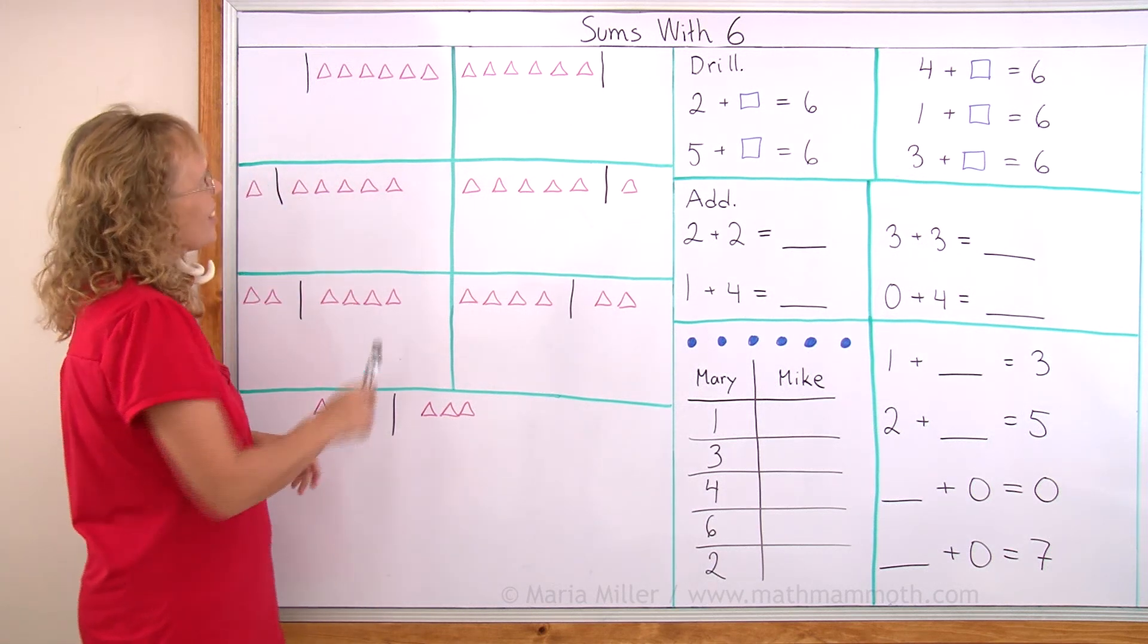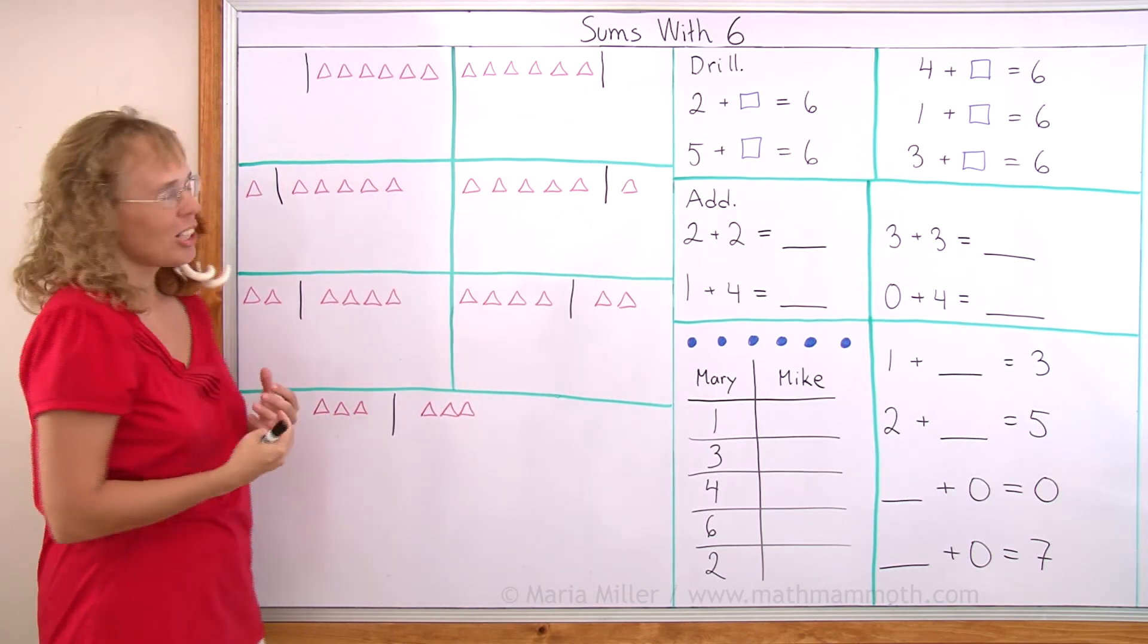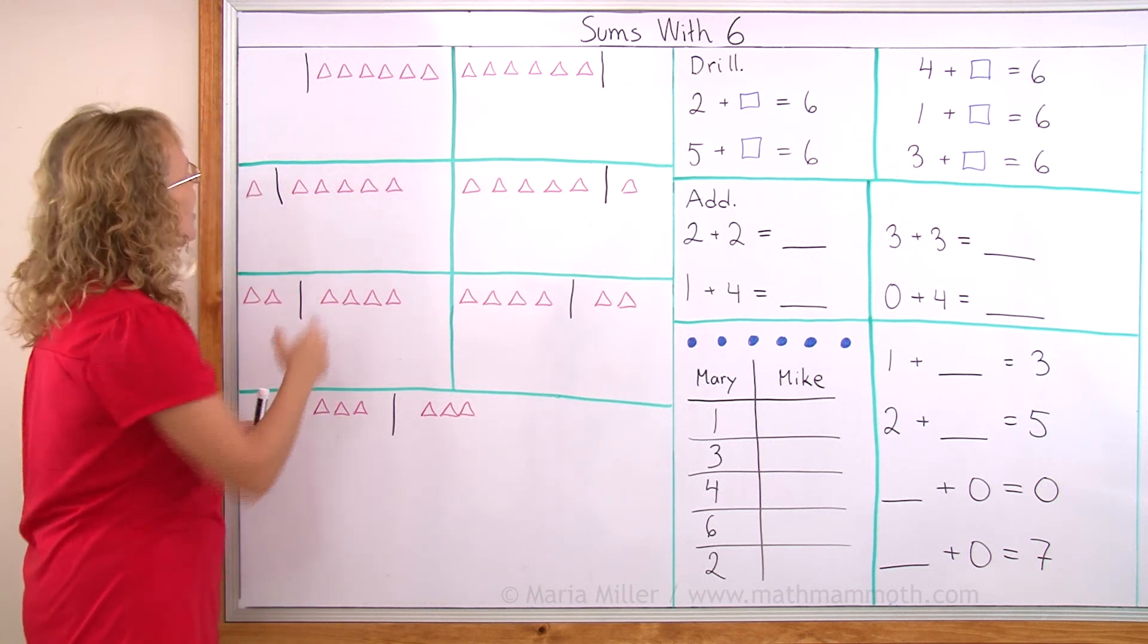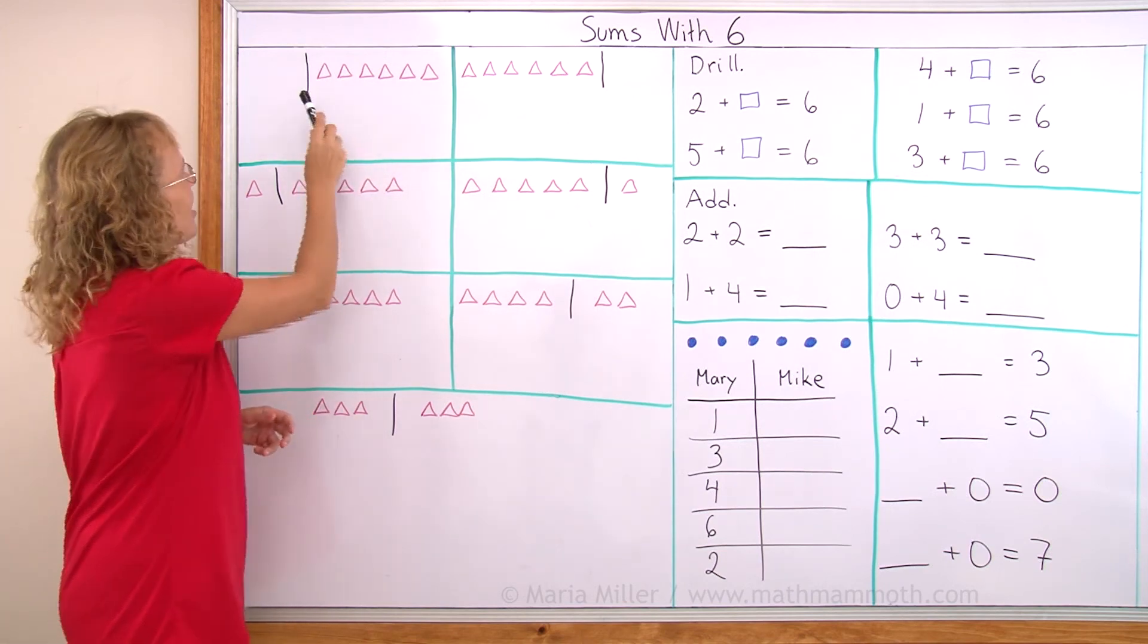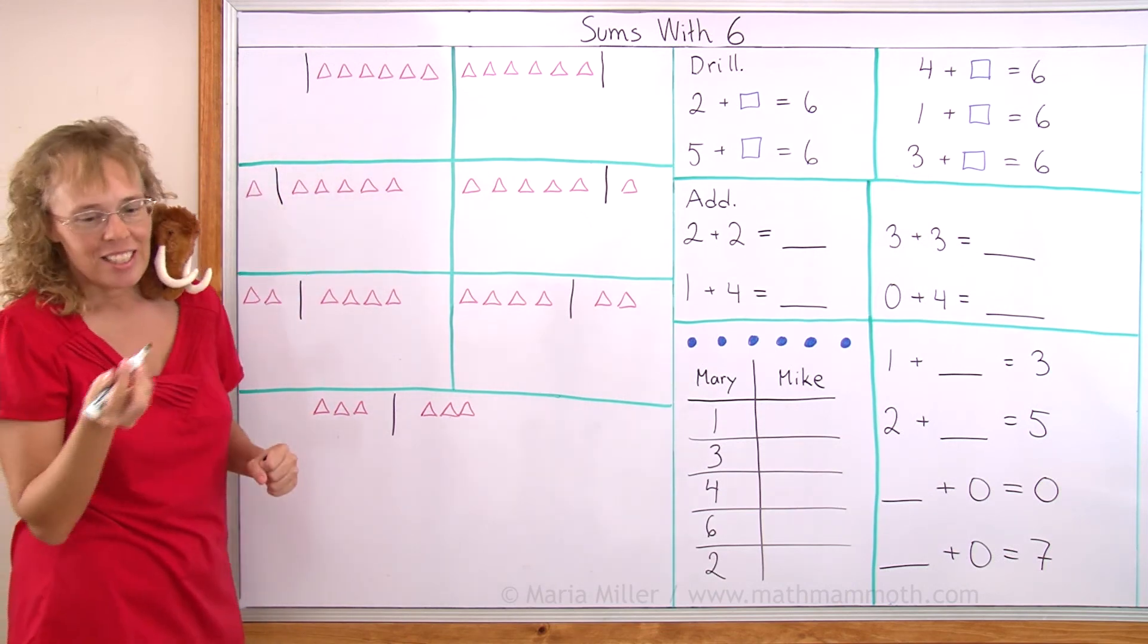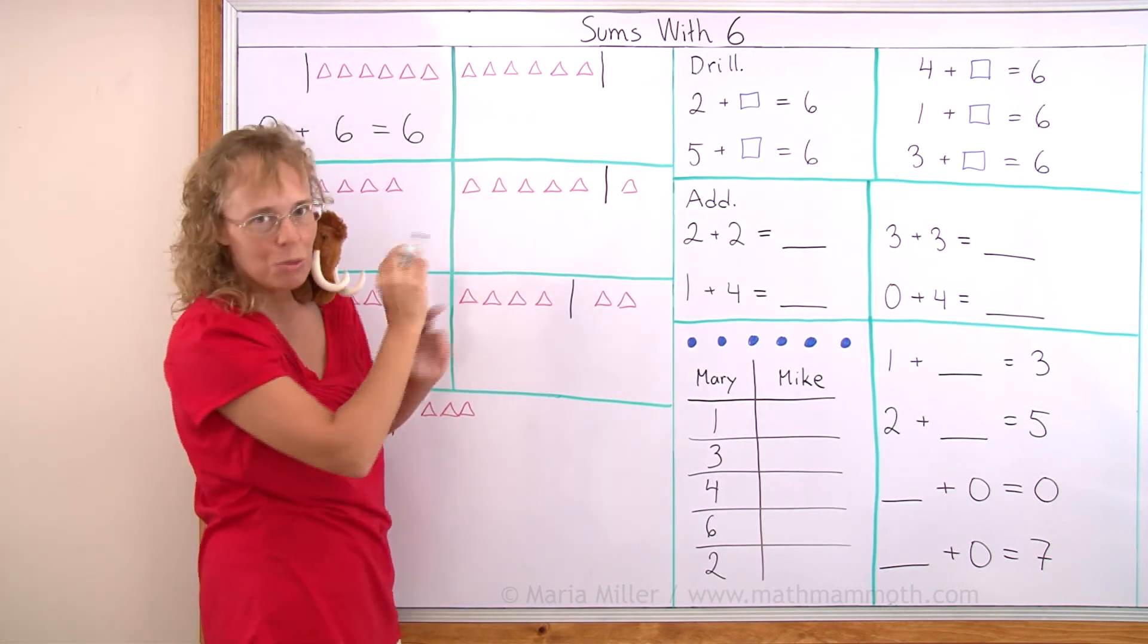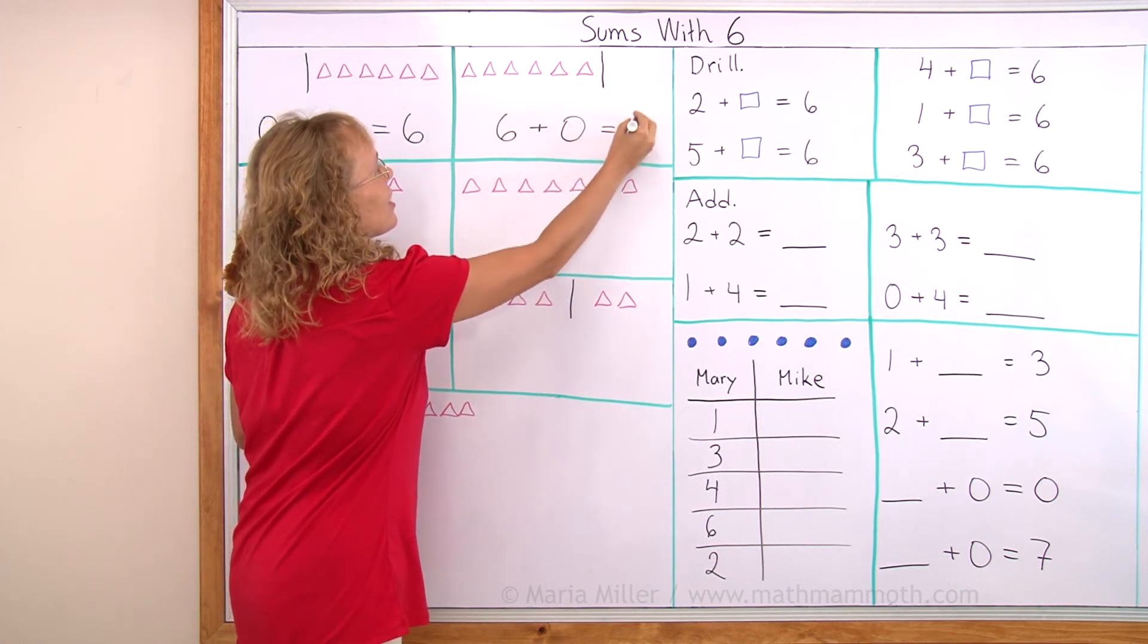For starters, I have here six triangles. In each of these boxes I have six triangles and we're going to group those six in different ways into two groups so that the answer or the total is always six. In this first one, on this side of this line or fence, there are six triangles here and on this side are none or zero. So I can write the addition zero plus these six and then that equals of course six in total, right? On this side I have my numbers switched so that I have six on this side and then I add zero on that side. The answer is six.